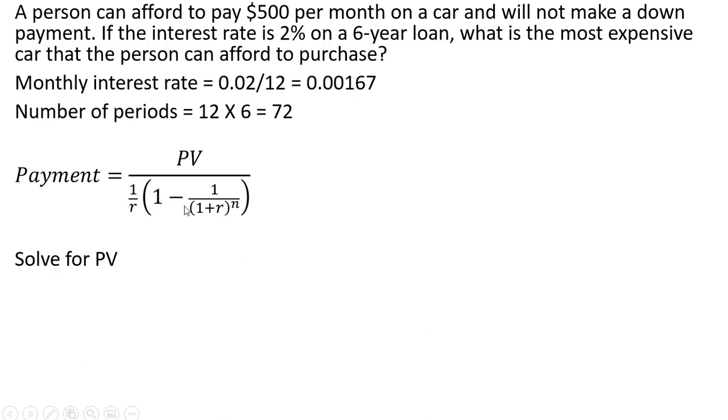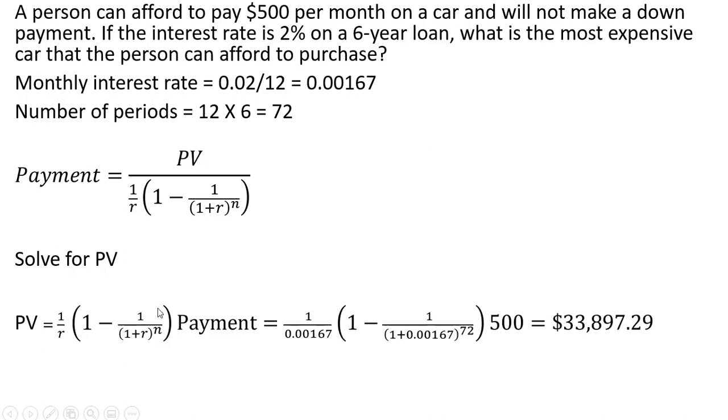And here's our formula but this time we want to solve for the present value. We know what the payment is, we're trying to solve for the present value. What is the most that this person can borrow if they want to have a $500 payment. So solving for the present value you have this formula right here and just plugging all the information we have into that formula, the interest rate, the number of periods, and then the payment here is $500, this person could afford to borrow almost $34,000.